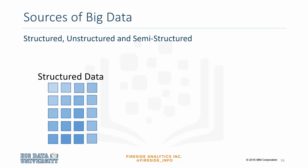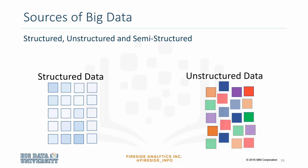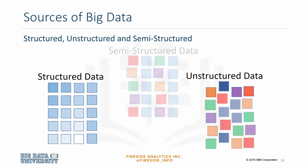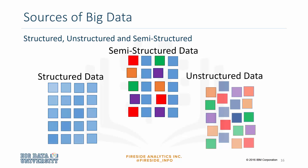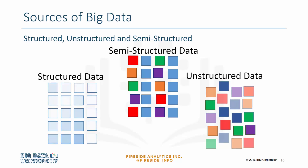Structured data is data that is organized, labeled, and has a strict model that it follows. Unstructured data is said to make up about 80% of data in the world, where the data is usually in text form and does not have a predefined model or is organized in any way. Semi-structured data is a combination of the two — it is similar to structured data where it may have an organized structure but lacks a strictly defined model.